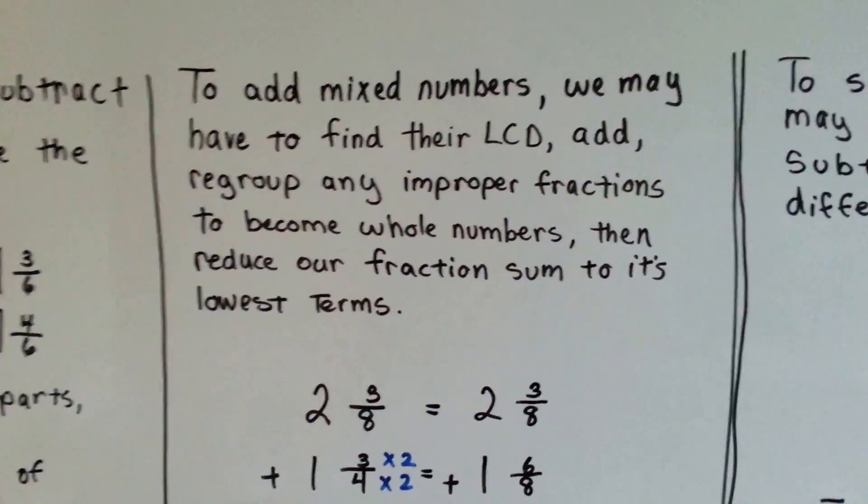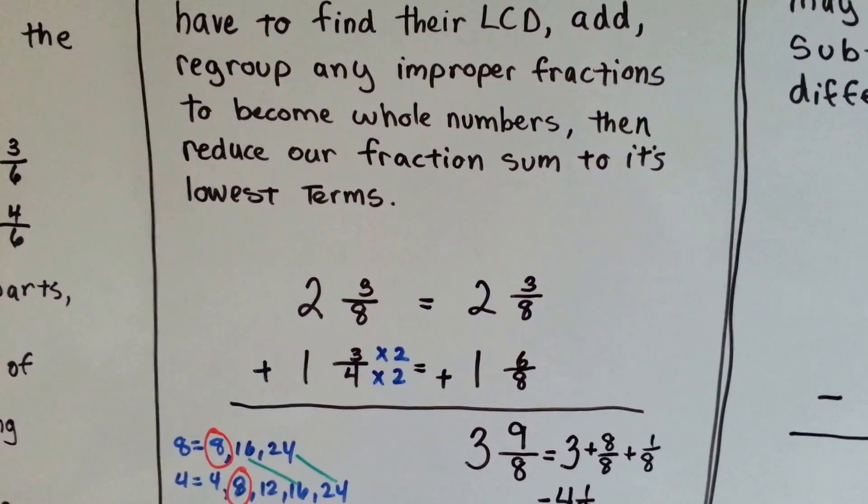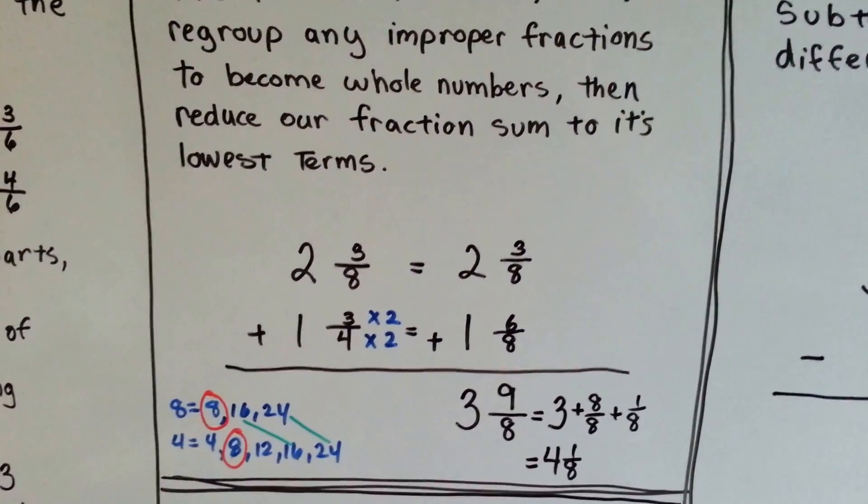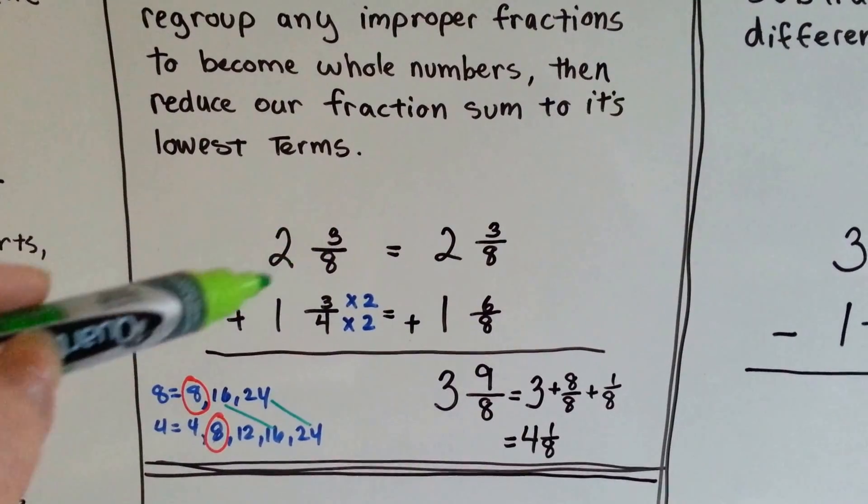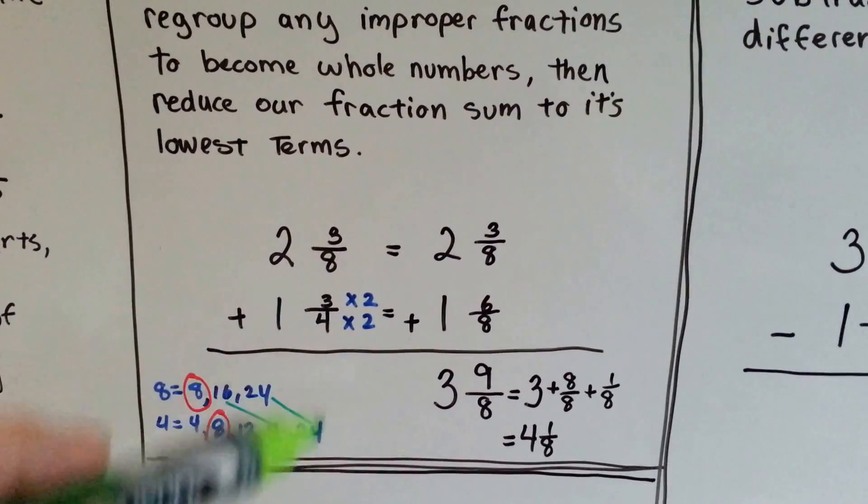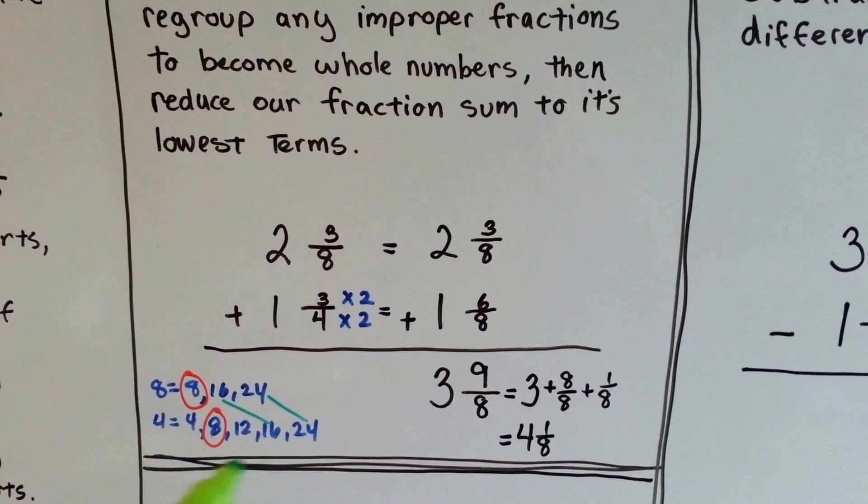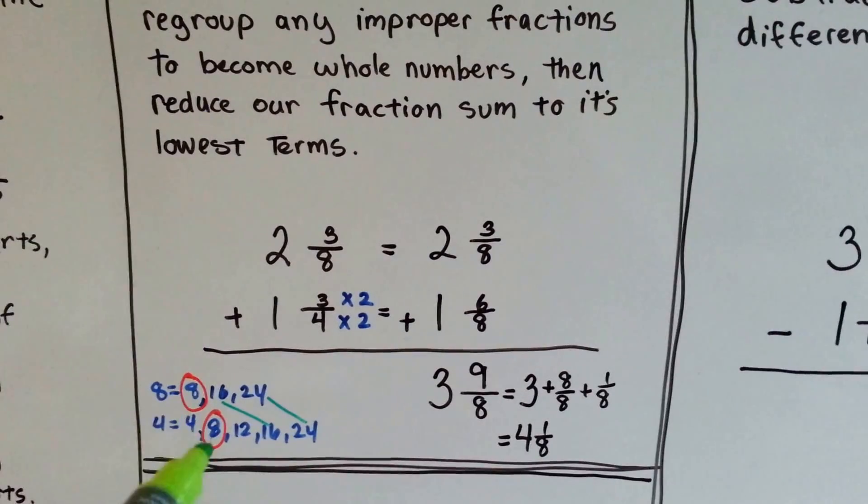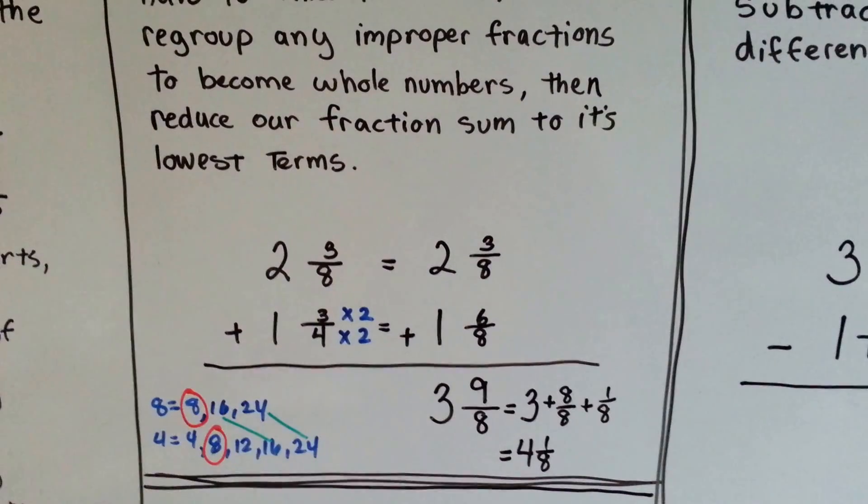To add mixed numbers, we may have to find their LCD, add, regroup any improper fractions to become whole numbers, and then reduce our fraction sum to its lowest terms. If we have two and three-quarters, we can't add it to one and three-fourths until we get the denominators to match. We list their common products, and we see that they have eight as the smallest common product. They have sixteen and twenty-four, but it's not the smallest, so they're going to meet at eight's house.